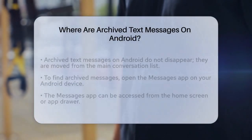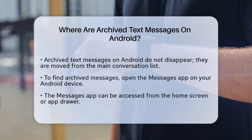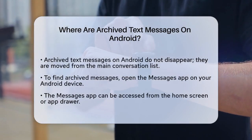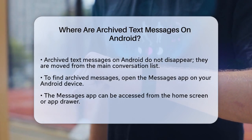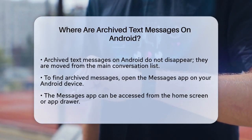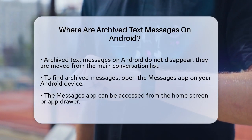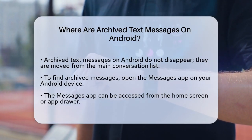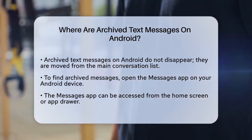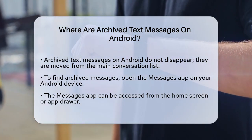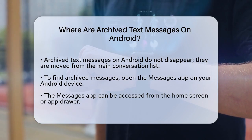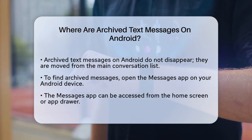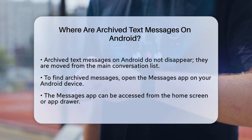Where are archived text messages on Android? If you're wondering where those archived text messages go on your Android device, you're not alone. Let's break it down step by step. When you archive a text message on your Android phone, it doesn't disappear — it just gets moved out of your main conversation list. To find these archived messages, you need to know where to look.